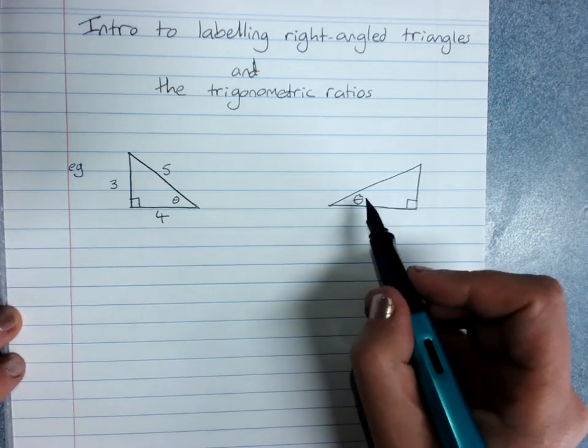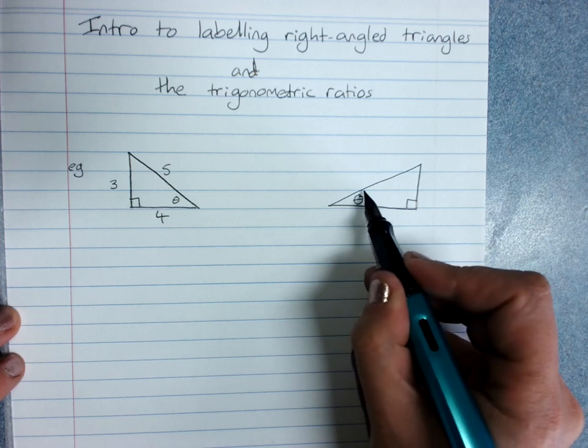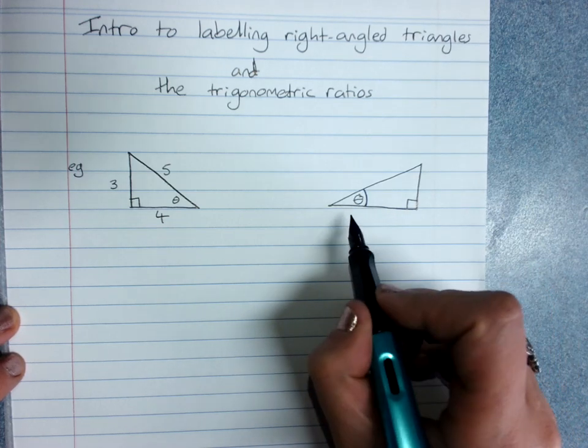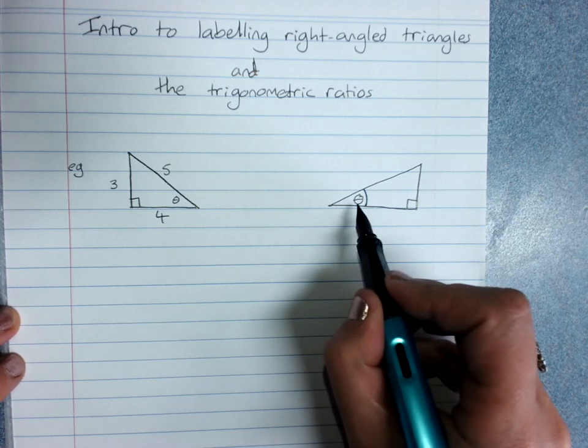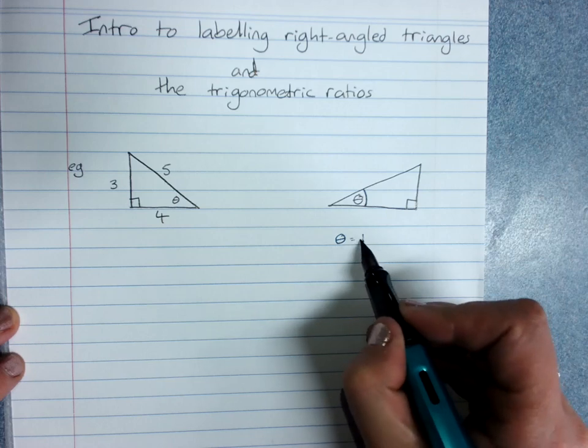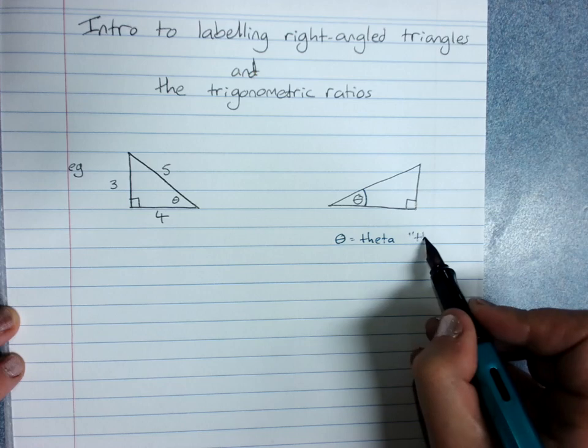When we label a right-angled triangle for trigonometry, we're labeling it compared to where a particular angle that we care about is. We'll often use this sign for the angle, like a circle with a line through it. This symbol's name is theta, and it just means the angle.